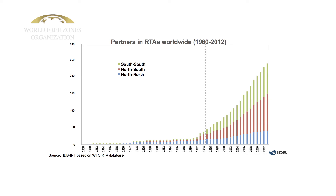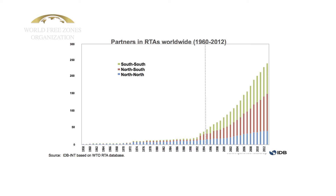Another very interesting characteristic of these agreements is that more and more they are not north-north agreements — what used to be mostly the European Union model in the 60s and 70s. After the mid-90s, more and more of these agreements are north-south agreements, signed between a developing economy and an advanced economy, and increasingly south-south agreements among emerging and developing economies. A completely different type of trade regulation in the last 15-20 years.